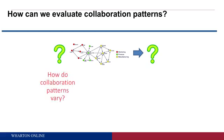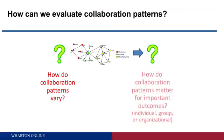The first question is: how do collaboration patterns vary inside the organization and across the different people in the network? The second is: how do collaboration patterns matter for important outcomes? Those outcomes may be at the individual level, group level, organizational level, or maybe it's a team. How do collaboration patterns matter for outcomes that we care about?